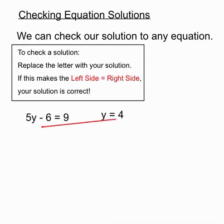If we replace the letter with our solution of y equals 4 on this next line, instead of the y, I've replaced it with a 4 here. That makes the left hand side 5 times 4 minus 6. See how that pans out. 20 minus 6 on the left hand side and 9 on the right hand side.